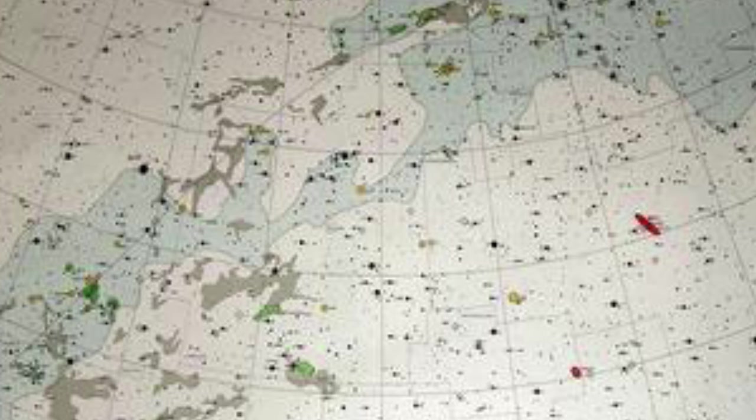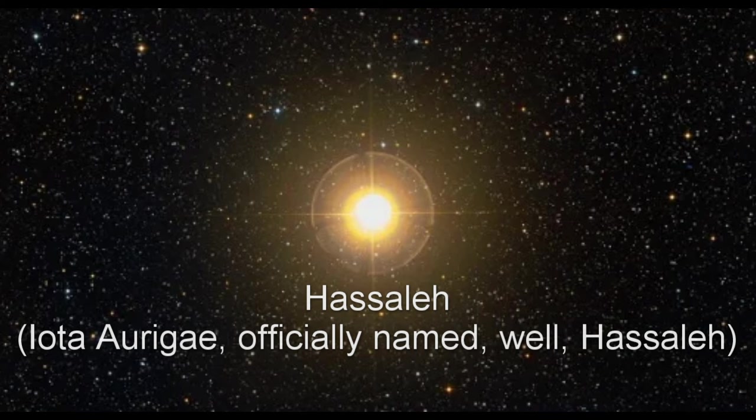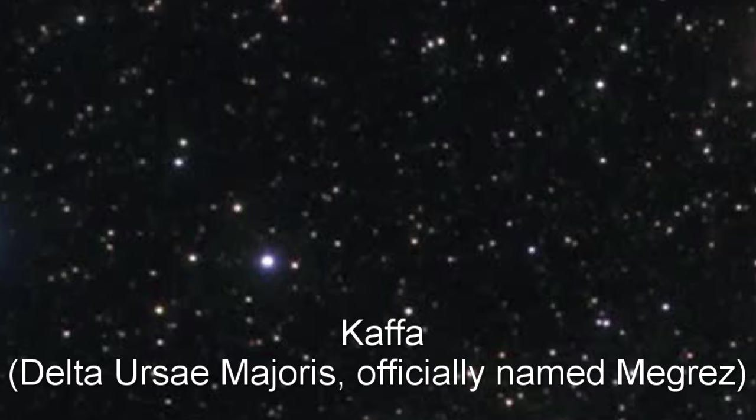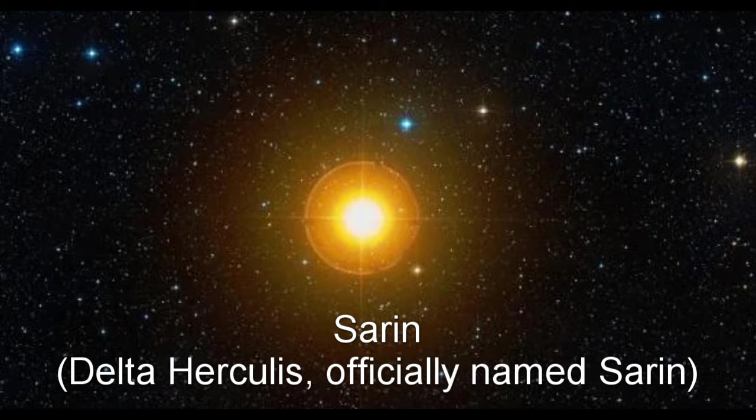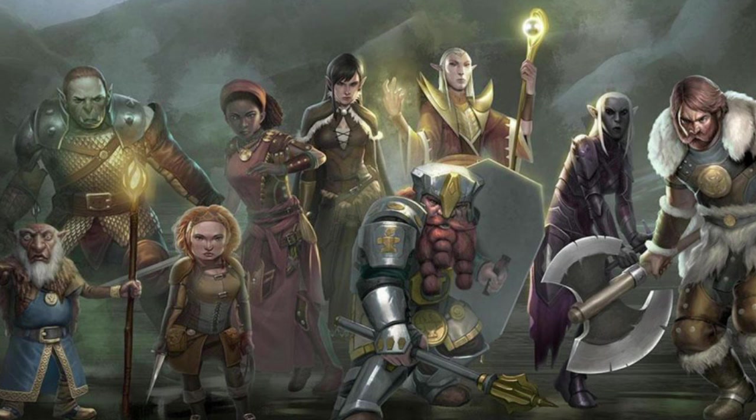And it isn't alone. Thirteen other stars in that atlas received novel monikers of uncertain etymology, including, but not limited to, Arich, Hasale, Hatissa, Kaffa, Kasora, Sarin, and Til. So if anyone's searching for character names for their next Dungeons & Dragons campaign, there you go.